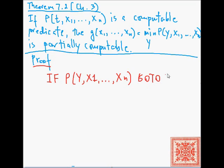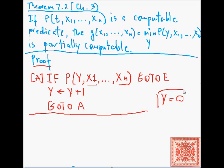If P(y, x1, ..., xn) are the two inputs, and y is the output variable, go to e. So we just output e, otherwise increase the value of y by one and go back to the first statement. We can label it with a.